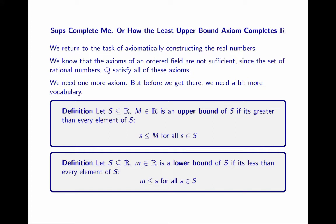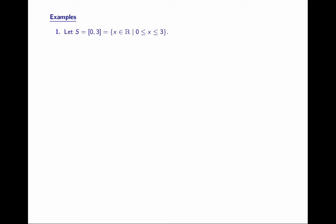An upper bound and lower bound means precisely what you think it means. So a few examples. Let S be the closed set 0 to 3 — that is, every number that is greater than or equal to 0 and also less than or equal to 3. 0 is a lower bound because, by definition, 0 is less than or equal to all x in my set. But so is negative 1, because negative 1 is less than or equal to all elements in my set.